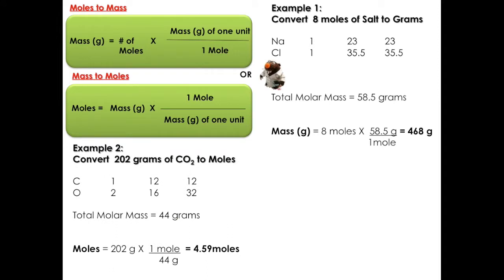Example number 2. If we want to convert 202 grams of carbon dioxide to moles. Back again, we get carbon dioxide giving us 44 grams.